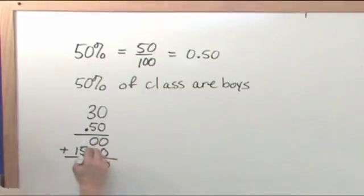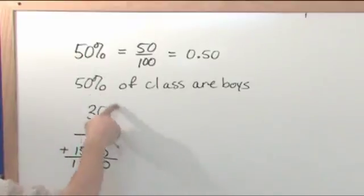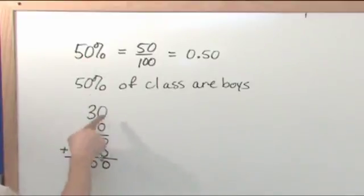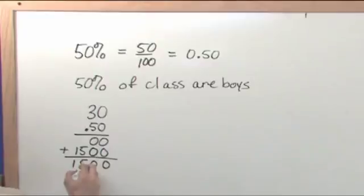Now you add to finish your multiplication out. 0 plus 0 is 0. 0 plus 0 is 0. 5 plus blank, which is just 5. And the 1 plus the blank, which is the same as 0, is a 1. So you have to figure out where to put your decimal. You go back to your problem and you see where are my decimals. I've got two spots after the decimal here. No decimals here. So I have to have two spots after the decimal in my final answer. So the answer is 15.00.